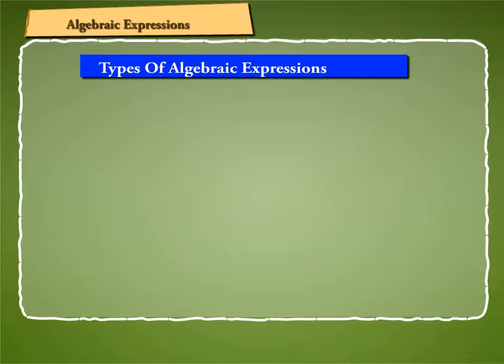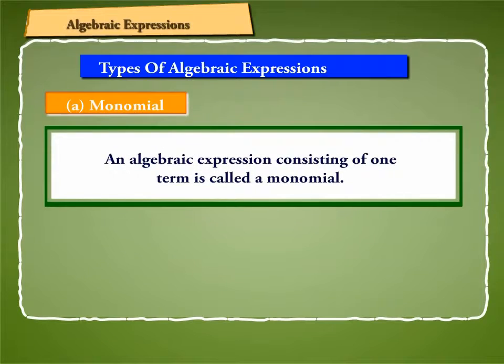Types of Algebraic Expressions. A. Monomial: An algebraic expression consisting of one term is called a monomial. For example, 2x minus 3y and 3x squared are monomials.